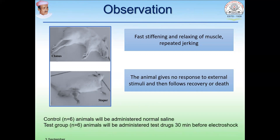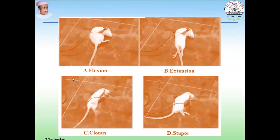Make two groups, each containing six animals. The control animals receive saline and another group receives the standard drug such as phenytoin. If you have a test drug, prepare multiple groups, each having six animals. Whenever you administer your drug, it should be administered before the electroshock — depending on the property of the drug, one hour before or 30 minutes before. After that, apply the electroshock and repeat the experiment for each group. Both ear pinnae electrodes are attached, and you can observe the flexion, extension, clonus, and stupor phases.